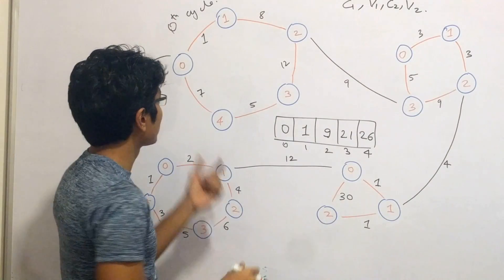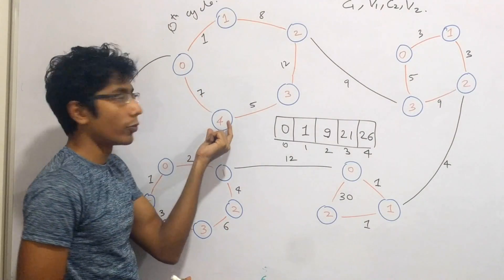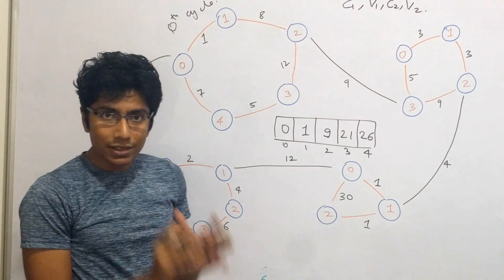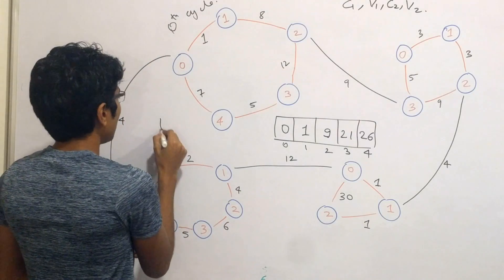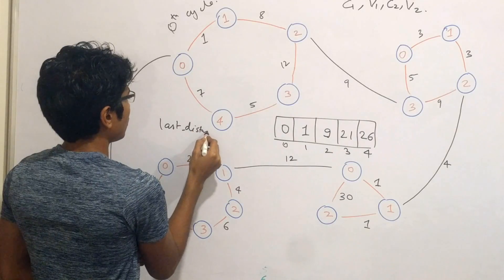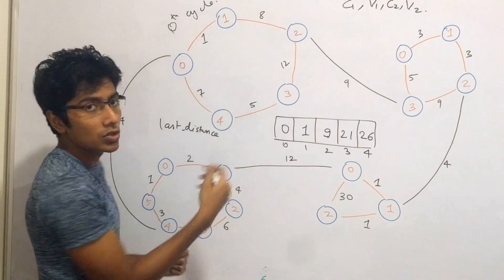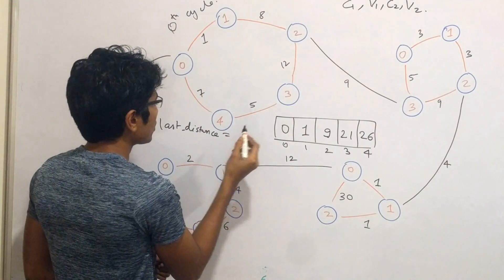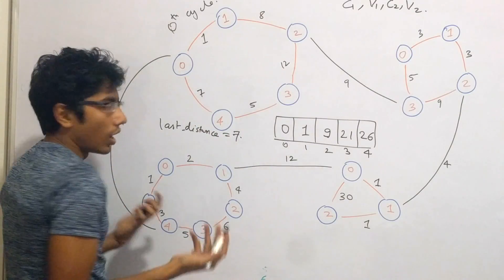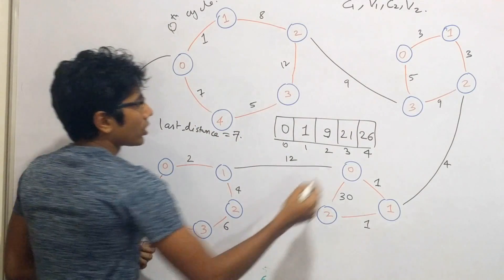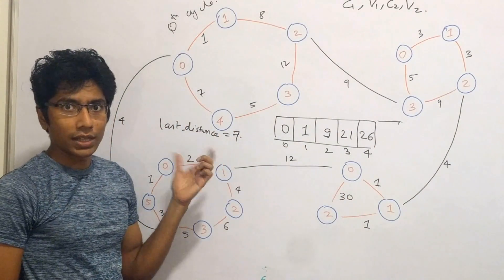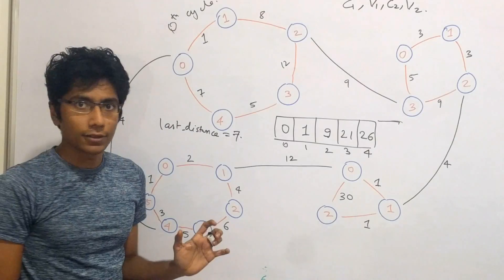We don't have the edge weight directly from node 0 to node 4 in the prefix array, so we store that separately. Let's call it 'last distance,' which is basically the anticlockwise distance to the last node from 0 — stored as 7 in this example. You could also add it to the prefix sum array, but I prefer to keep it separate; that's the implementation I used during the contest.